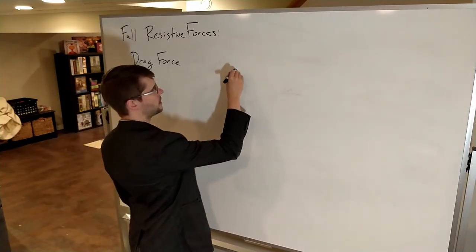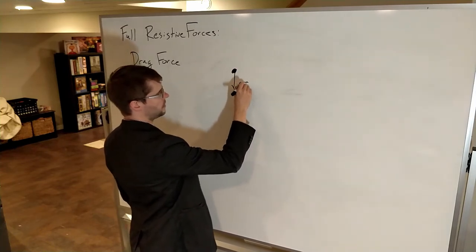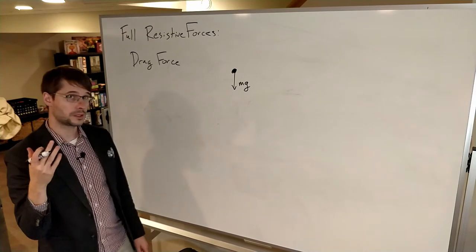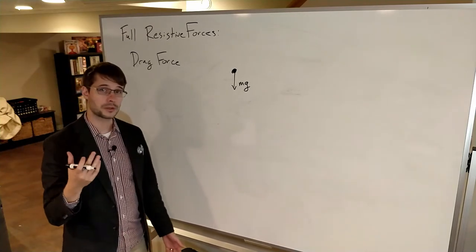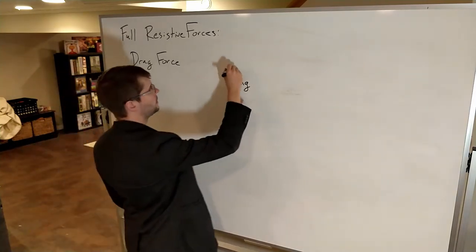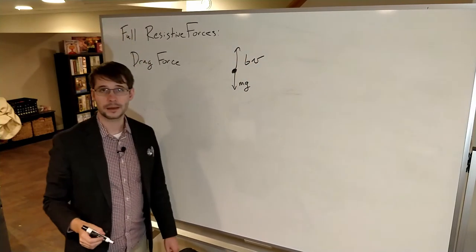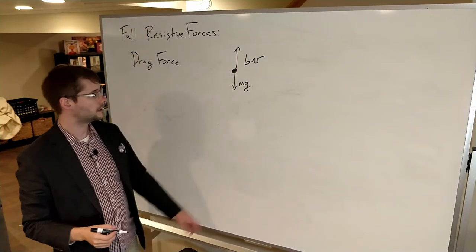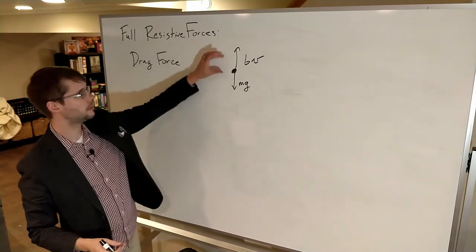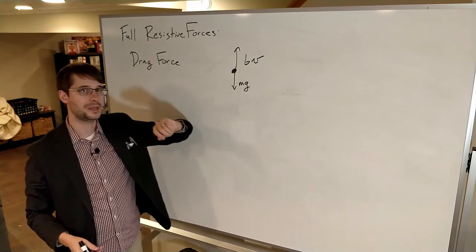If we start with some object in free fall, it has a downward force of mg. But rather than just free fall, we're going to include an upward drag force — an air resistance force. This upward force is equal to BV. The downward and upward forces oppose each other, and as the object speeds up, the drag force gets larger because it's proportional to speed.